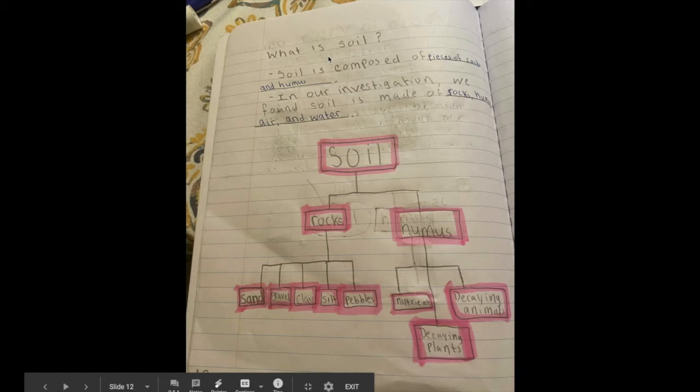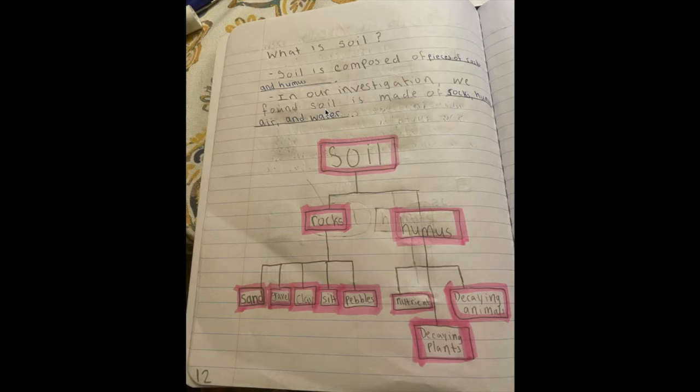This is page 12. Page 12, we discussed more about what soil is made up of. We learned that it was made of different size rocks and humus. We also added a chart to help us what soil is made up of.